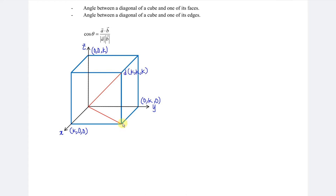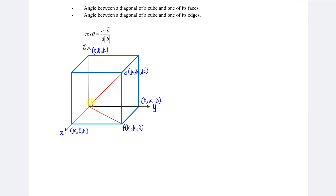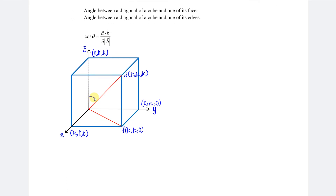For this point on the floor, let's call it point F. It will have the x unit and the y unit but no z component, so this point will be (k, k, 0). Let the angle between the diagonal and the edge be alpha, and the angle between the diagonal and the face be theta. So we can proceed to the calculation using the idea of vectors.